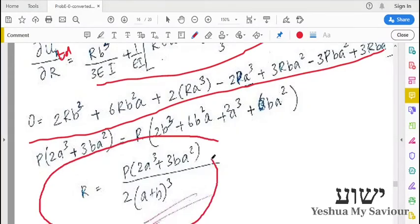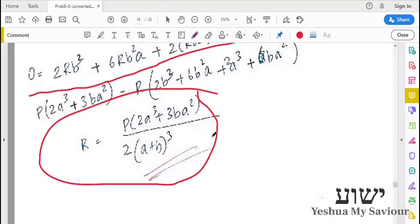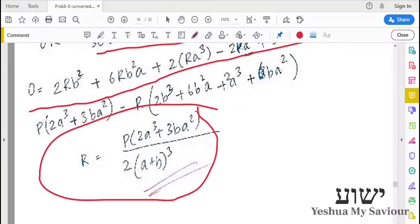That's it. We will get the support reaction that will keep point R without being deflected. Obviously there will be no deflection at point R. Try it once.